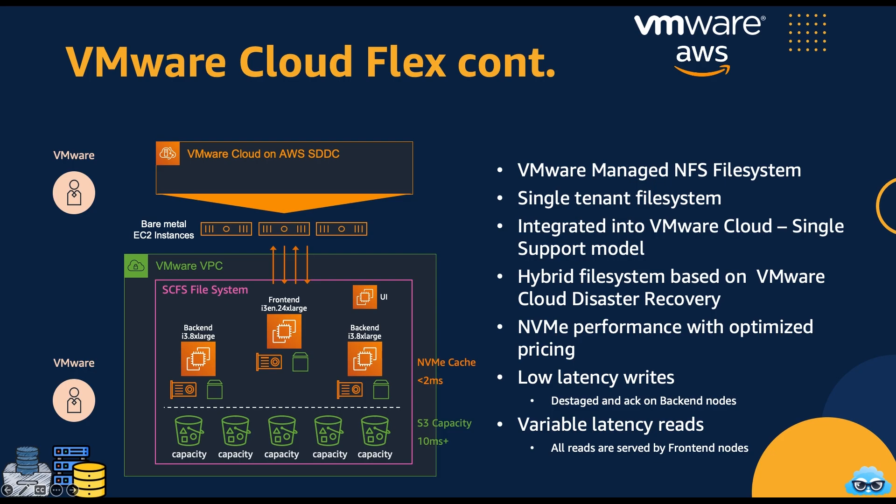The architecture of VMware Cloud Flex is designed for efficiency and performance. VMware Cloud Flex operates within a VPC (virtual private cloud) managed by VMware, ensuring a secure and controlled environment. It provides a dedicated, single-tenant file system, guaranteeing isolation for your data and workloads. The backend leverages AWS S3 as the capacity tier, delivering scalability and cost-effectiveness for storing large volumes of data. This architecture optimizes the storage infrastructure, balancing performance and capacity, making VMware Cloud Flex a valuable asset for capacity-heavy workloads.